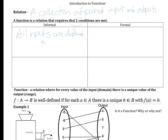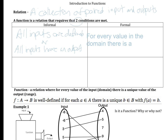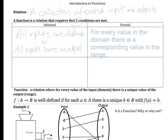Or you could say it even more simply: all inputs have an output. A formal definition will look something like this — for every value in the domain, there is a corresponding value in the range. We haven't talked about all those words yet, but that is the more formal definition.